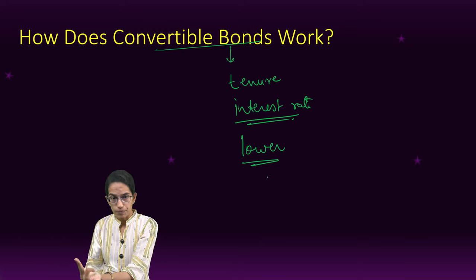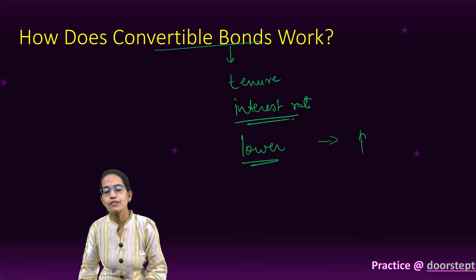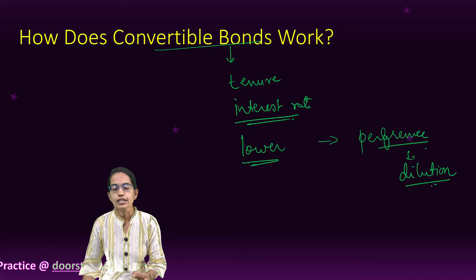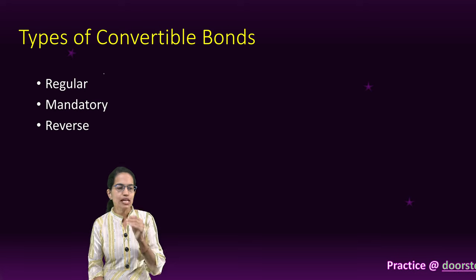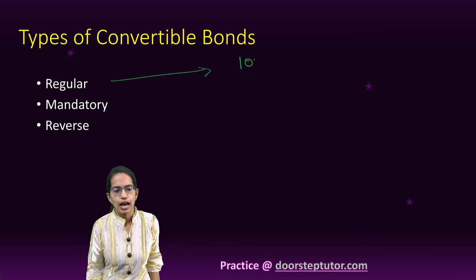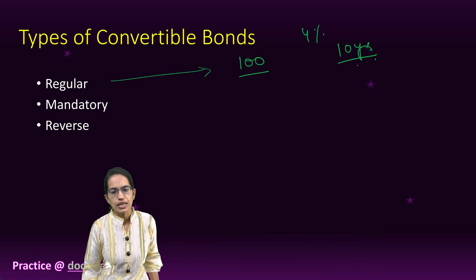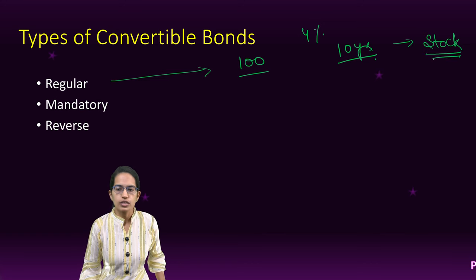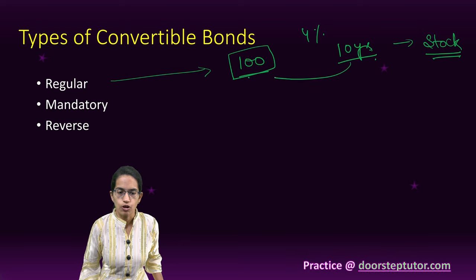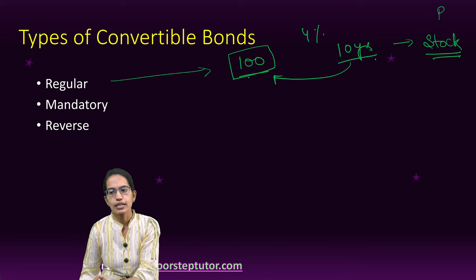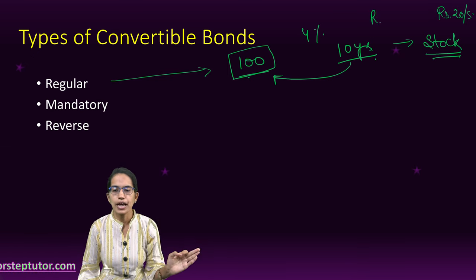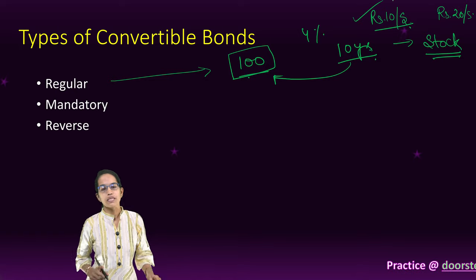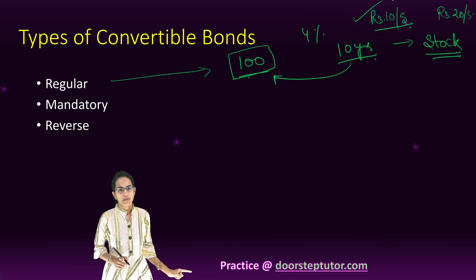The first type of bond is a regular bond. A regular bond means I have a bond for 100 rupees at 4% for a tenure of 10 years. After my tenure expires, I can switch to stock. The share I would get would be at the pre-promised rate — let's say the real market rate is 20 rupees per share, but my original price was 10 rupees per share. So my bonds would be converted into shares at 10 rupees, the price confirmed at the time of booking the convertible bond.